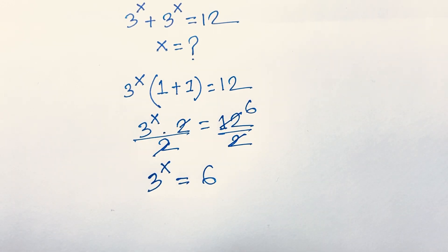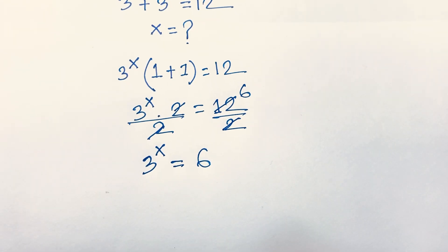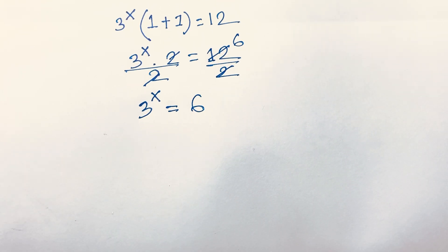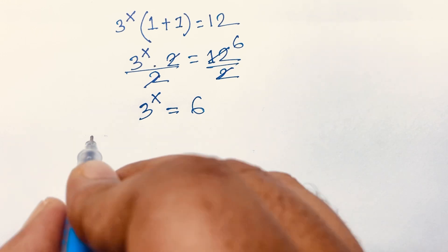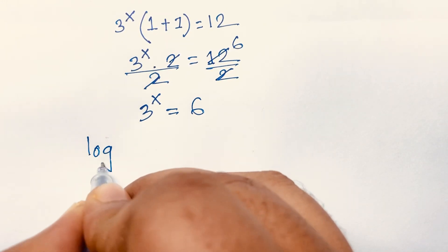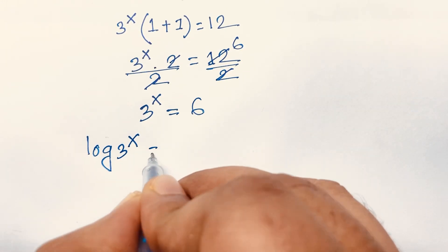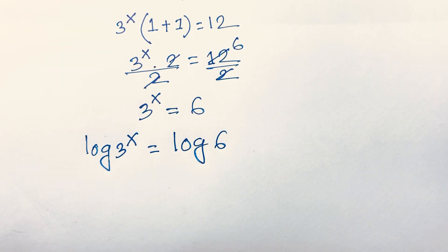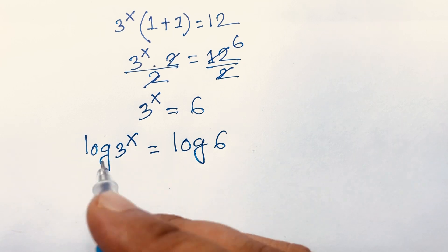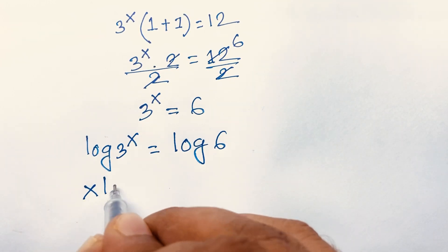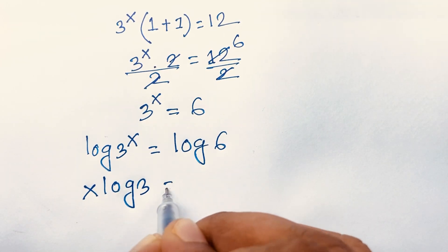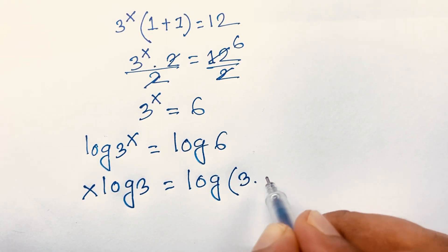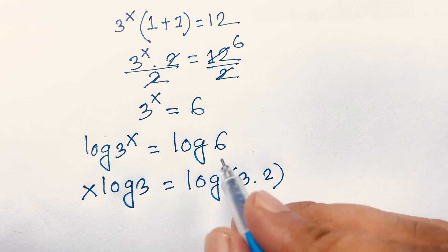Now, to find the value of x, I apply the natural log to both sides: log(3^x) equals log(6). According to logarithm rules, I can bring the exponent x to the front, giving x times log 3 is equal to log 6.